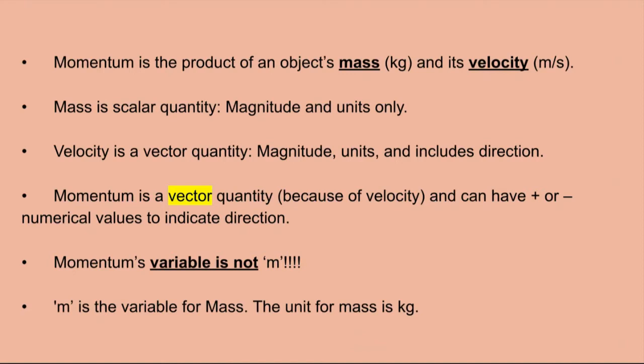The definition of momentum is the product of an object's mass and its velocity. Remember that mass is a scalar quantity, which means it only has magnitude, or numerical value and units. Velocity, on the other hand, is a vector quantity — it has magnitude, units, and also includes direction. Momentum is a vector quantity because of velocity, and as a result it can have positive or negative numerical values to indicate direction.